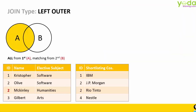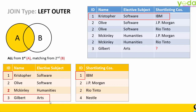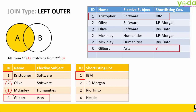I will start with Left Outer. By definition, it says all from the first table and matching from the second table, which means all those IDs present in Table A must be present in the final table. ID code 1 has been invited by IBM, and you will see the result here. ID code 3, Gilbert Arts, has unfortunately not been invited by any company — you will see question marks there. When an ID is repeated twice, and similarly two companies shortlisted ID number 2, join uses Cartesian product to show all four combinations. That is how join handles duplicates.